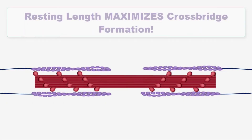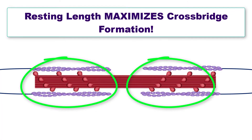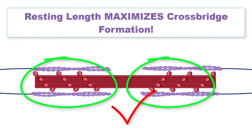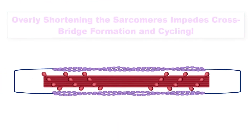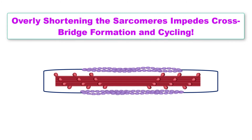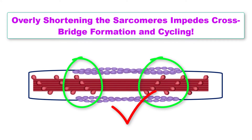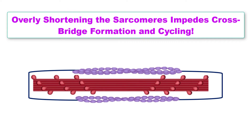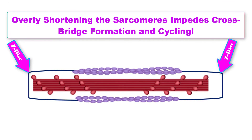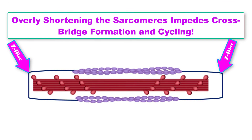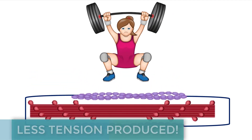At the resting length of the muscle, the maximum amount of cross-bridges are able to form. When the sarcomeres are overly contracted, there is a high degree of overlap between the thick and thin filaments, but further muscular contraction is halted by the butting of the myosin filaments against the Z-discs. Tension decreases due to this pause in cross-bridge cycling.